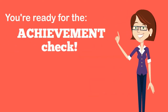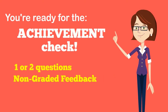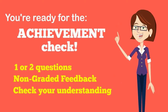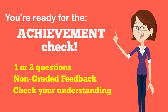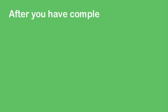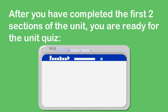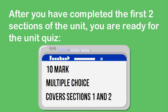After you have completed the homework, you're ready for the achievement check. The achievement check is one or two questions on the section that gives you non-graded feedback to check your understanding. After you have completed the first two sections of the unit, you are now ready for the unit quiz, which is a 10-mark multiple choice quiz covering those first two sections.